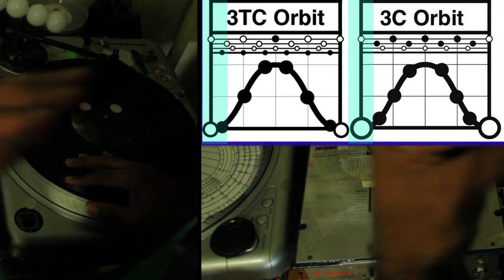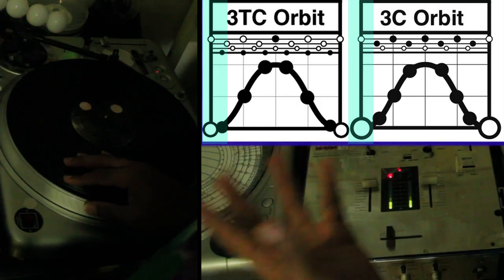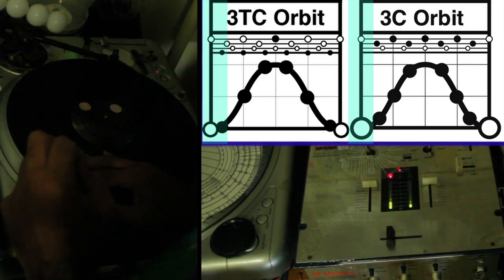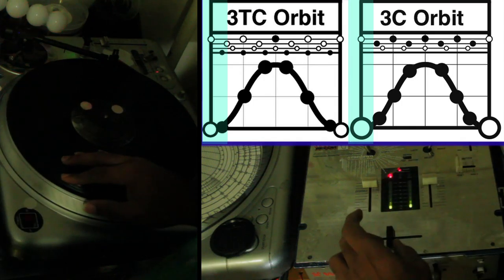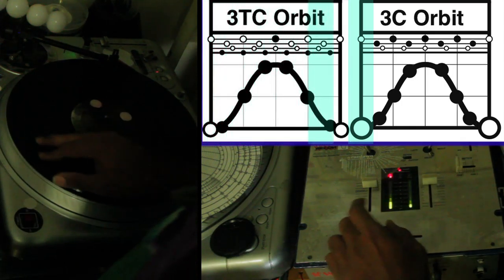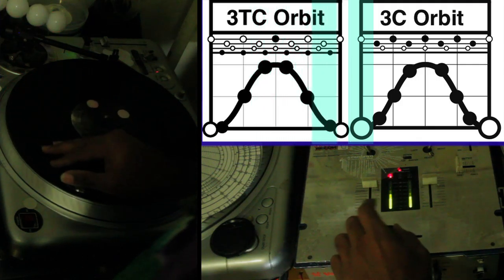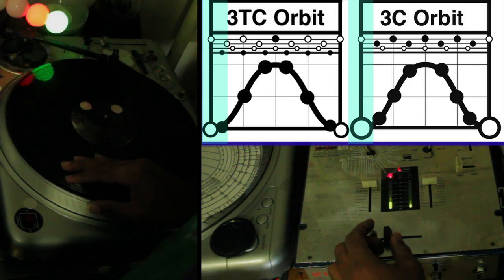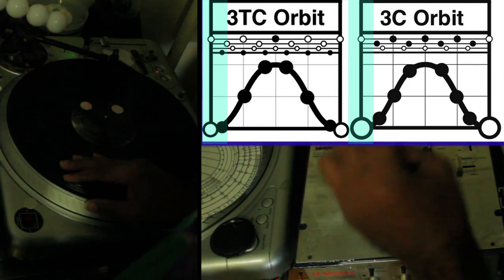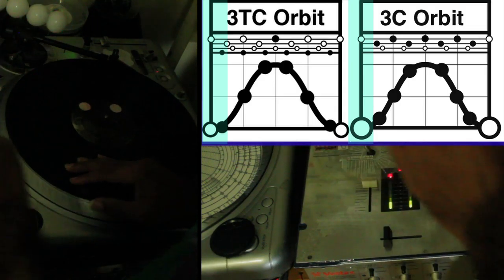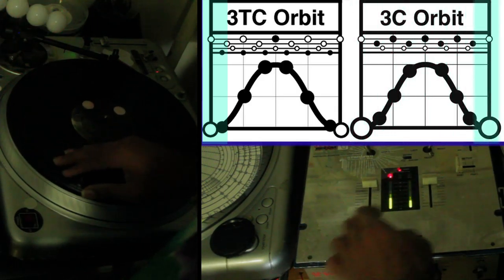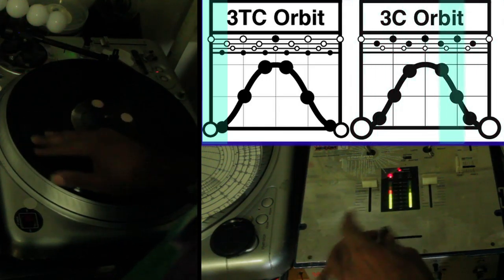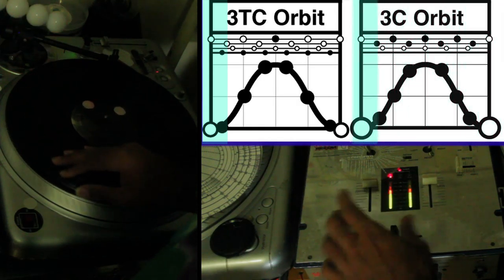This is a three-click flare in the general style that most people do — a three-click flare, or you can call it three-click orbit. In this one, the clicks are not evenly spaced apart. Remember the first one, the clicks were evenly spaced apart. This one, the clicks are much closer together — it's like a burst of three clicks. So it's like: what-da-da-da.